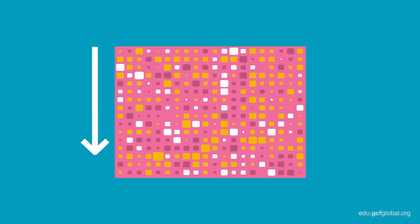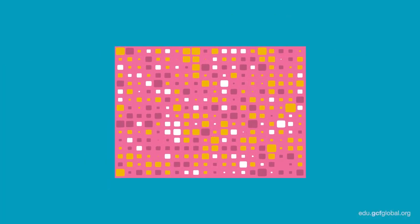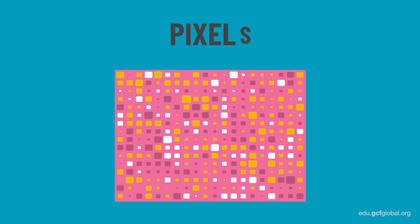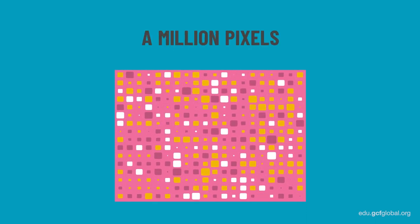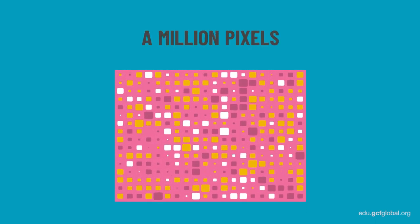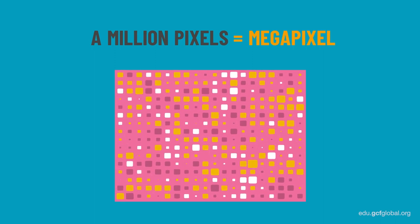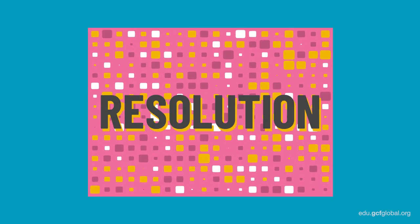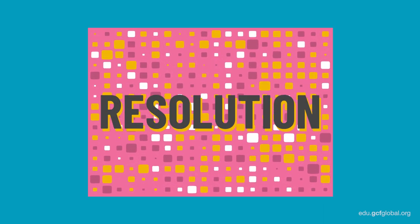A camera sensor is full of tiny, light-sensitive areas arranged in vertical and horizontal lines that form what's commonly known as pixels. A million pixels together form something called a megapixel, and it's through those that we can identify the resolution of a camera.